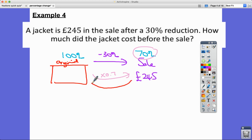So doing the inverse operation here, dividing by 0.7, brings me back to the original. So 245 divided by 0.7 gives me an answer of £350. And that's my final answer.